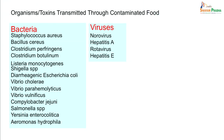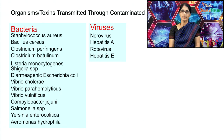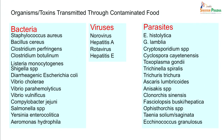Certain viruses can also enter via contaminated food, like Norovirus, Hepatitis A, Rotavirus, and Hepatitis E. There are also many parasites transmitted via food, including protozoan parasites like Entamoeba histolytica, Giardia lamblia, Cryptosporidium species, Cyclospora cayetanensis, and Toxoplasma gondii. Nematodes such as Trichinella spiralis, Trichuris trichiura, Ascaris lumbricoides, and Anisakis species. Trematodes like Clonorchis sinensis, Fasciolopsis buski, and Paragonimus. Cestodes like Taenia solium, Taenia saginata, and Echinococcus granulosus can also be transmitted via food.